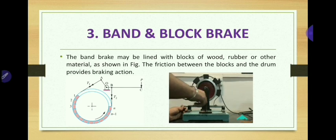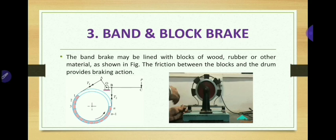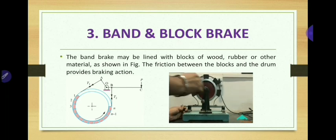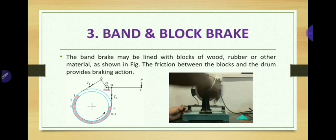As you can observe in this animation, n number of blocks are attached to the band. When you apply some force on the lever, these blocks make contact with the rotating drum and bring it to stop. In the left-hand diagram also you can observe a differential kind of band brake where OA distance and OB distance, where the band is attached, are different.